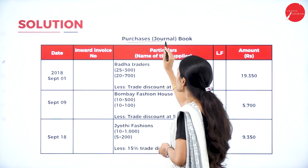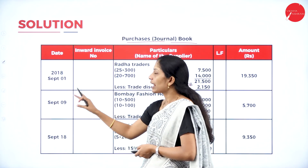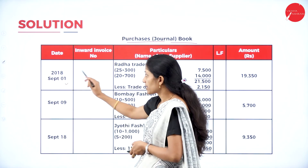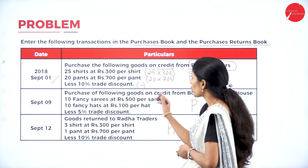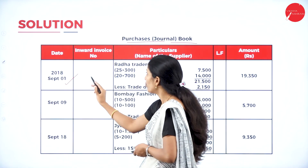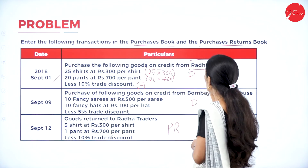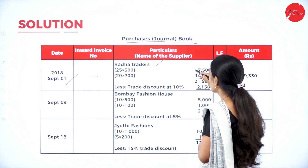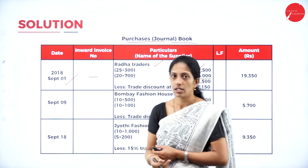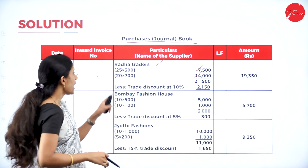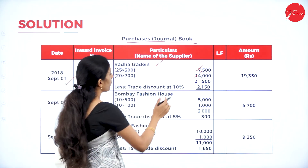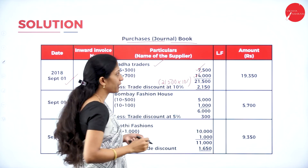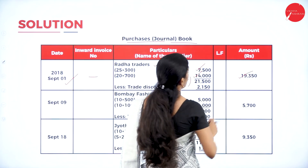Purchases book format: date, inward invoice number, name of the supplier, ledger folio, and amount. First entry — September 1st 2018, no inward invoice number, supplier Radha Traders. Calculate: 25 shirts × Rs. 300 = Rs. 7,500; 20 pants × Rs. 700 = Rs. 14,000; total Rs. 21,500. Less trade discount at 10%: 21,500 × 10% = Rs. 2,150. So 21,500 − 2,150 = Rs. 19,350.